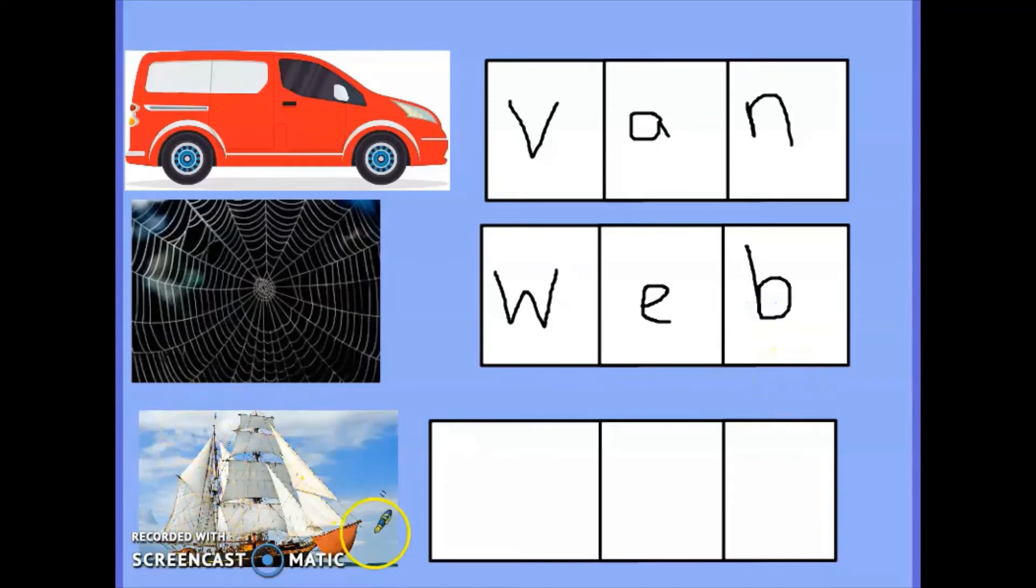The next one that we have would be a ship. So have a go at segmenting that on your own. Let's try it together. Sh i p ship. Well done. Let's write it. Remember what we call it when two letters make one sound? It's a digraph. So we've got sh i p. Ship. Fantastic.